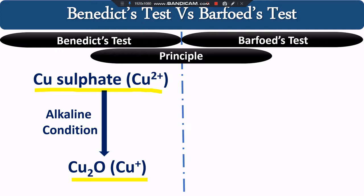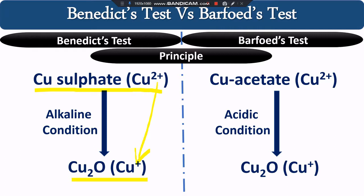Because of reducing sugars, copper sulfate is reduced to cuprous oxide — meaning Cu²⁺ is reduced to Cu⁺ in alkaline conditions. In the Barfoed test, we are also using Cu²⁺ ions, but the source of copper is copper acetate, and the reaction takes place in an acidic environment, not alkaline. This is the major difference: Benedict test uses alkaline conditions, while the Barfoed test uses acidic conditions.